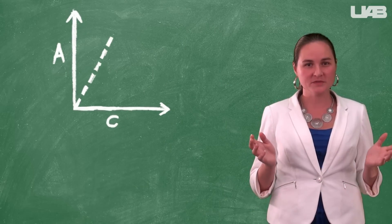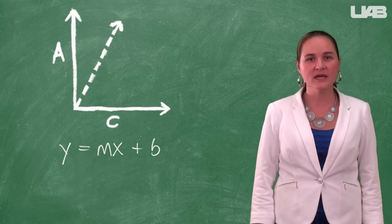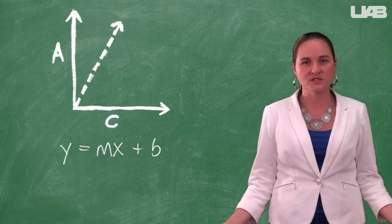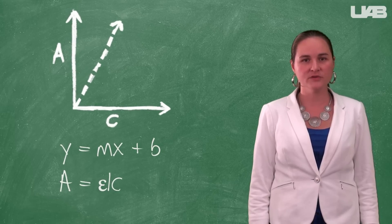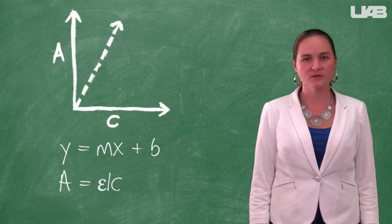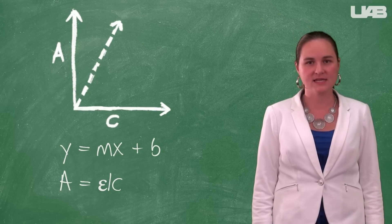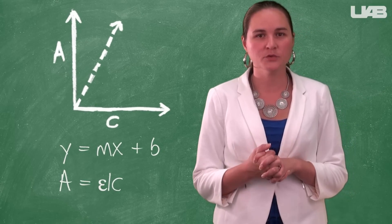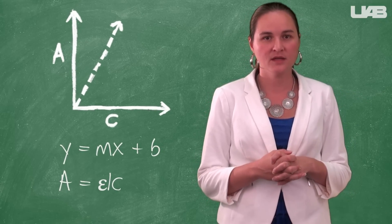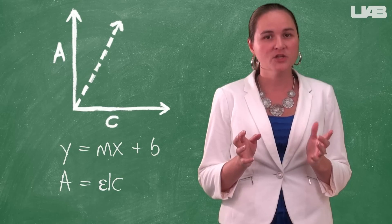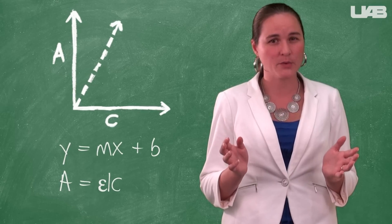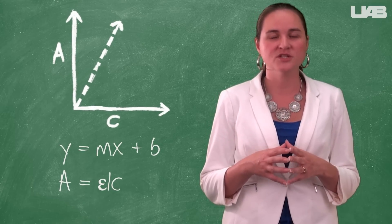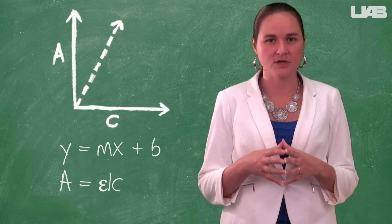By plotting absorbance versus concentration, you will be able to get the equation for a line that passes through your points, which should mirror the Beer-Lambert law and give you an expression that you can use to convert any given absorbance of the crystal violet into concentration. The slope will be equal to epsilon times L. If you did this perfectly, your y-intercept would be zero. But since life rarely works that way, this number is a good reflection of how far off your numbers are.